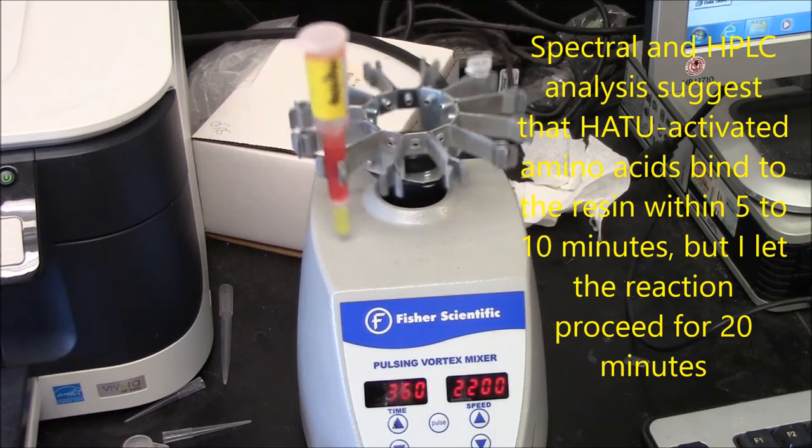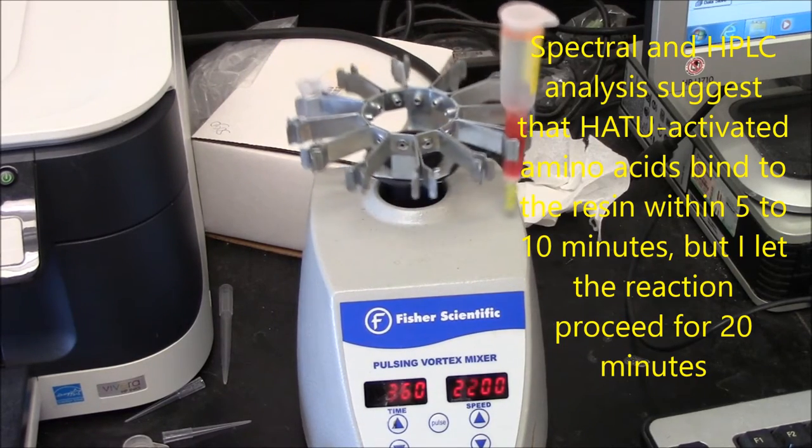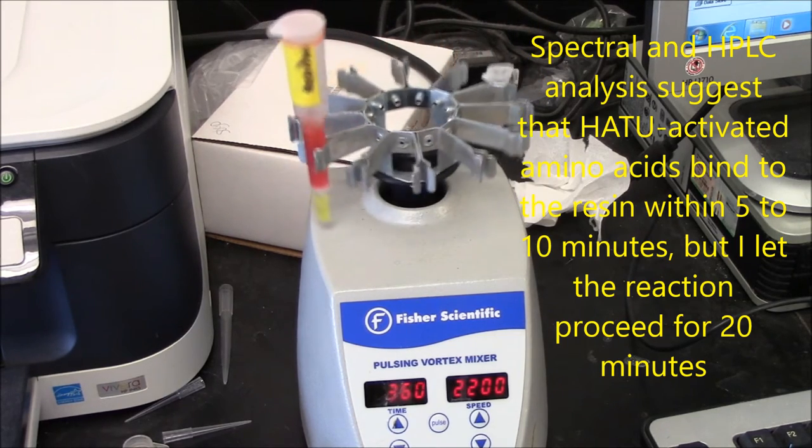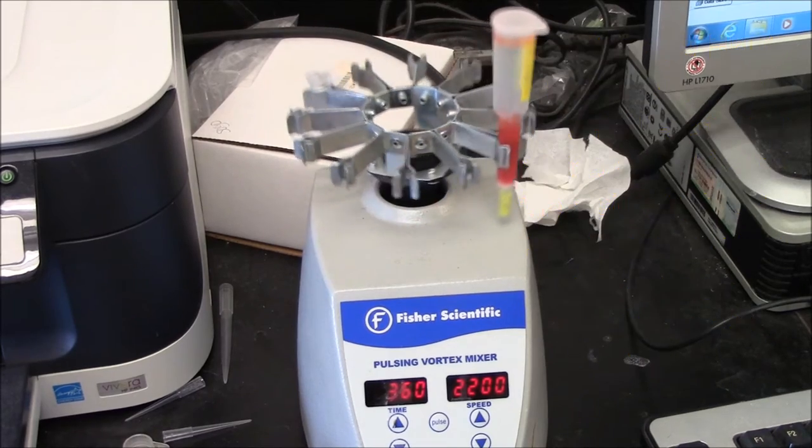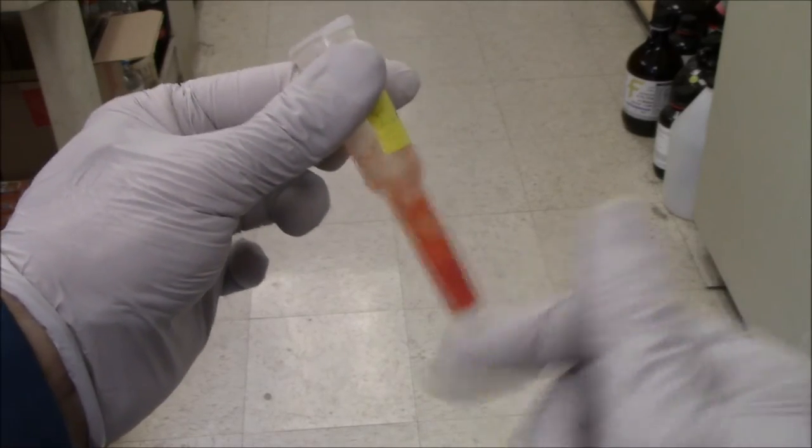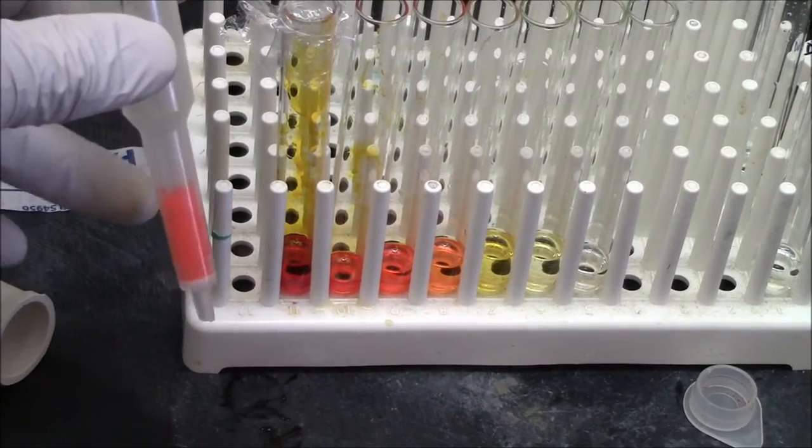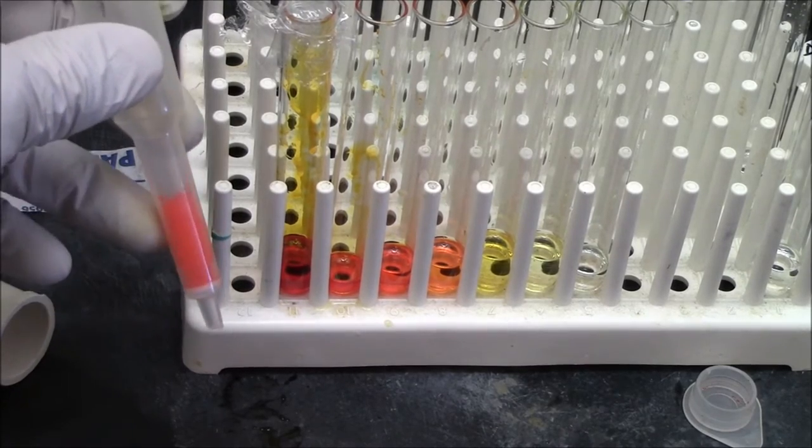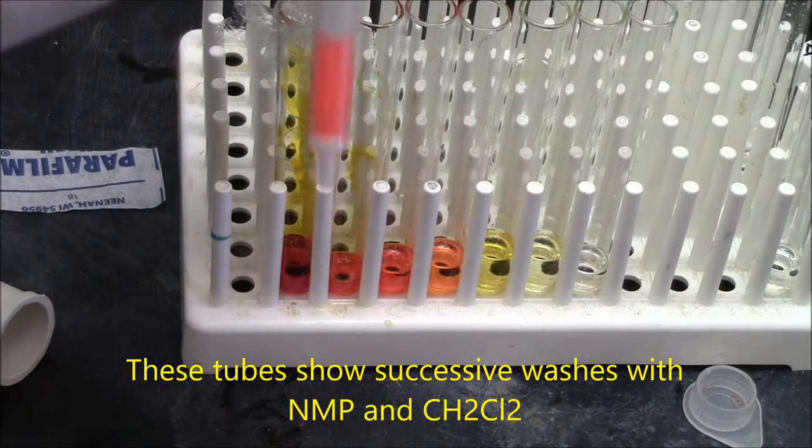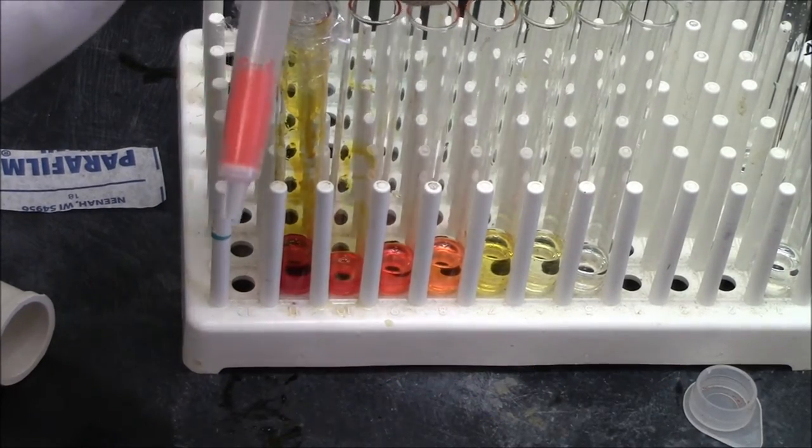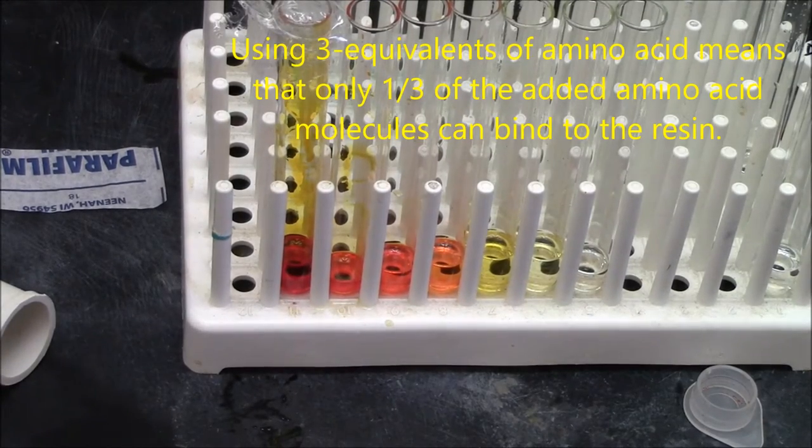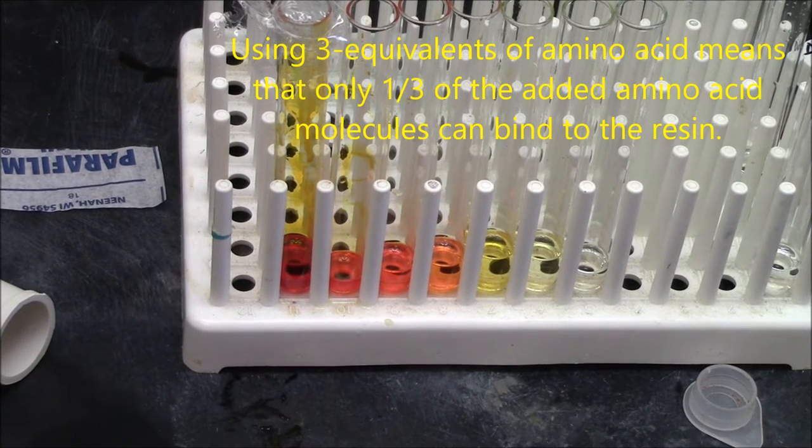Once I've suspended the beads manually, then I put them on this vortexer at 2200 RPMs. I will still need to resuspend manually every few minutes because the beads will settle. This is what it looks like when the beads settle and a little agitation can get them resuspended. After 20 minutes, I drained the excess Dapsyl lysine and washed the column with NMP and dichloromethane. Although you can see I did wash away quite a bit of excess Dapsyl lysine, the column is still red. That's the covalently bound amino acid. So I washed away all the free Dapsyl ligand.